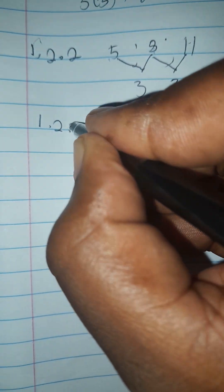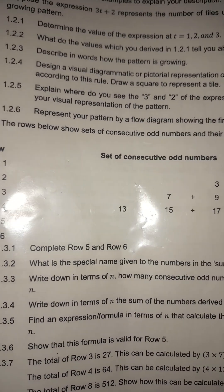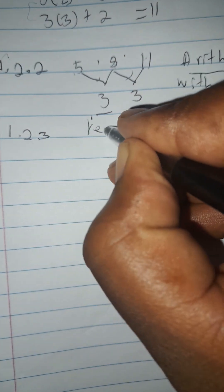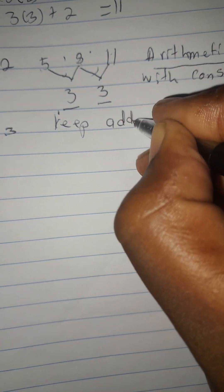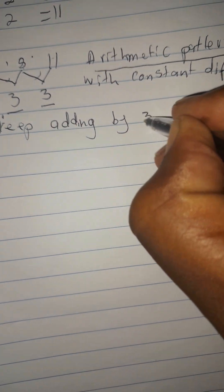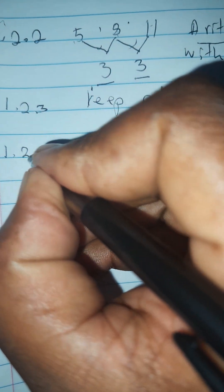At 1.2.3, the question asks: describe how the pattern is growing. We can say we keep adding by the constant difference of 3 to grow the pattern. In simple terms: keep adding 3 consecutively to grow the pattern.